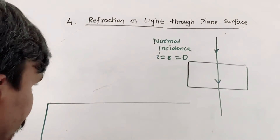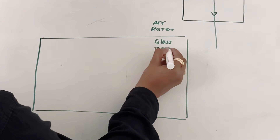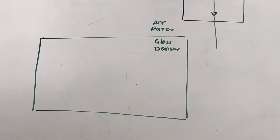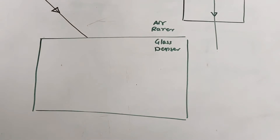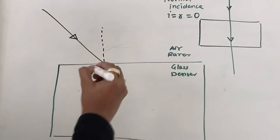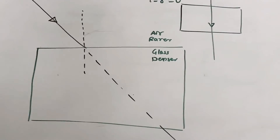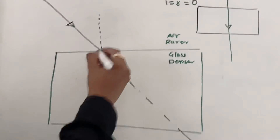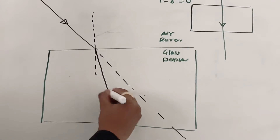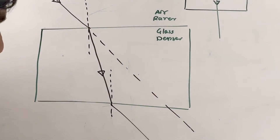This is my glass slab. The glass is kept in air, so this is your rarer medium and this is your denser medium. A ray of light is incident obliquely on this — this is the incident ray. I will draw the normal here. This ray is going from rarer to denser, so it will bend towards the normal. Then I will draw a normal on the other side — now it is going from denser to rarer, so it will go away from the normal.